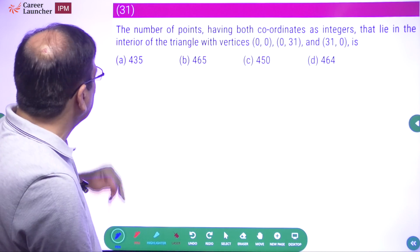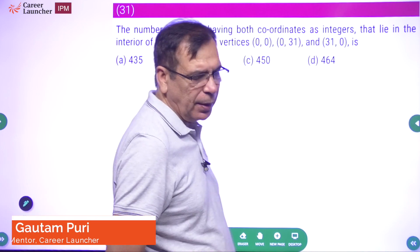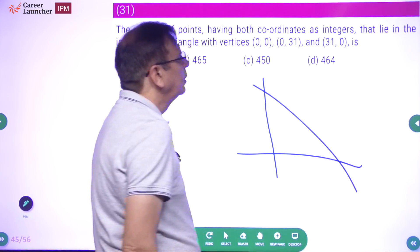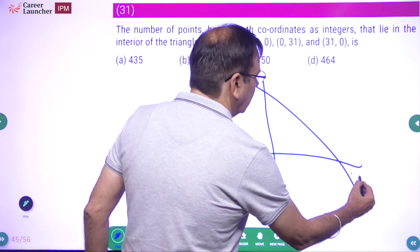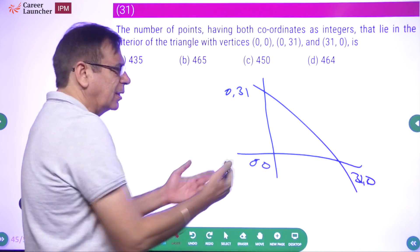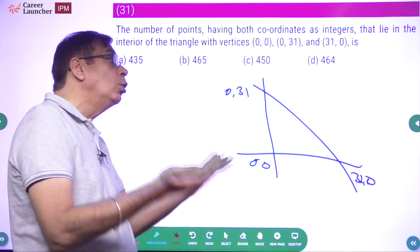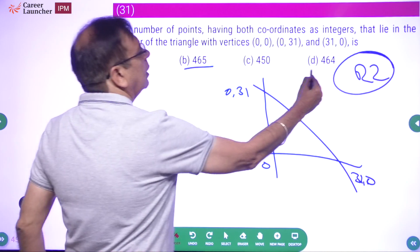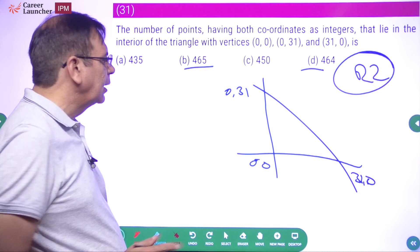The question asks for the number of points having both coordinates as integers that lie in the interior of a triangle. I will not do this question — I'll leave it in the paper. It's not that it cannot be done, but it will take time. The vertices are (0,0), (31,0), and (0,31). There will be a pattern which will emerge, but this is a round two question for me because if I miss one case I get the wrong answer.